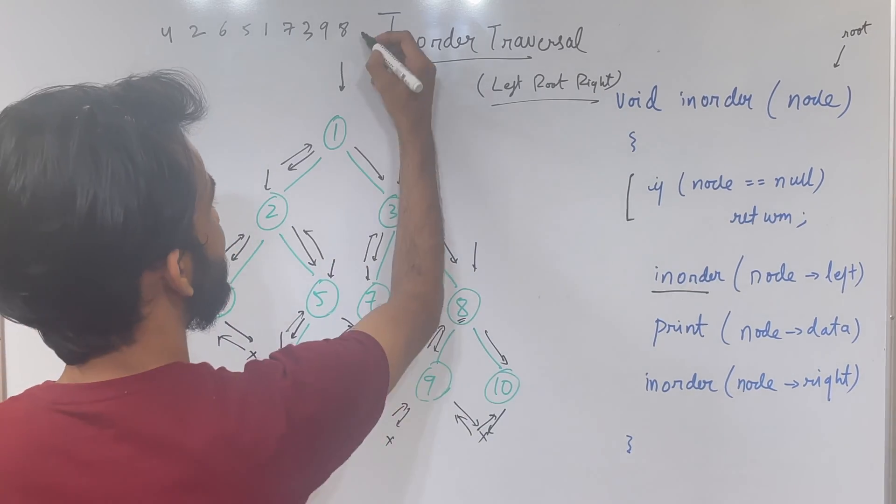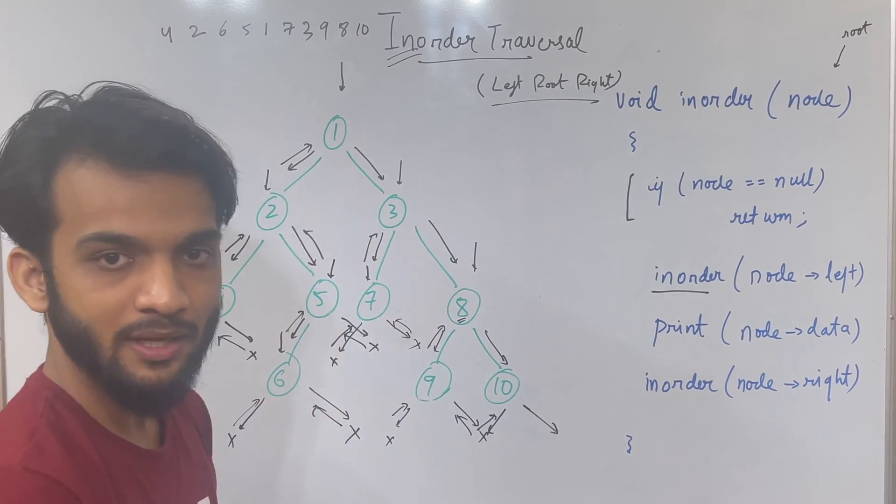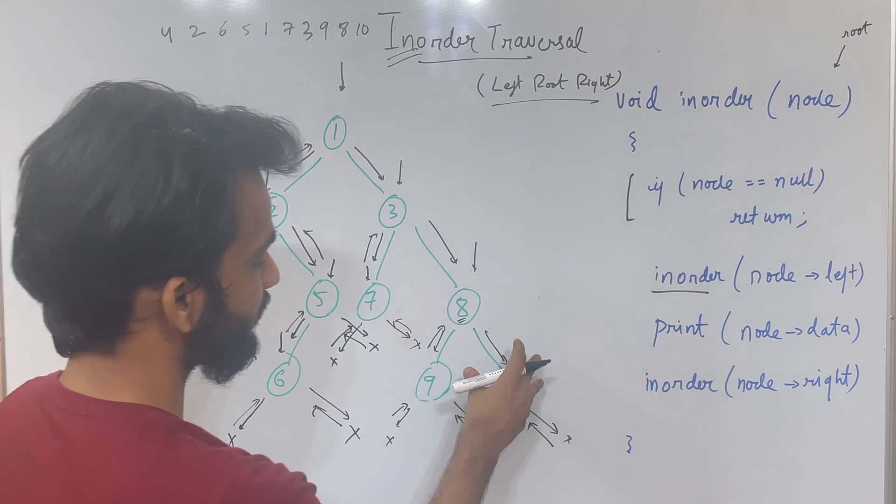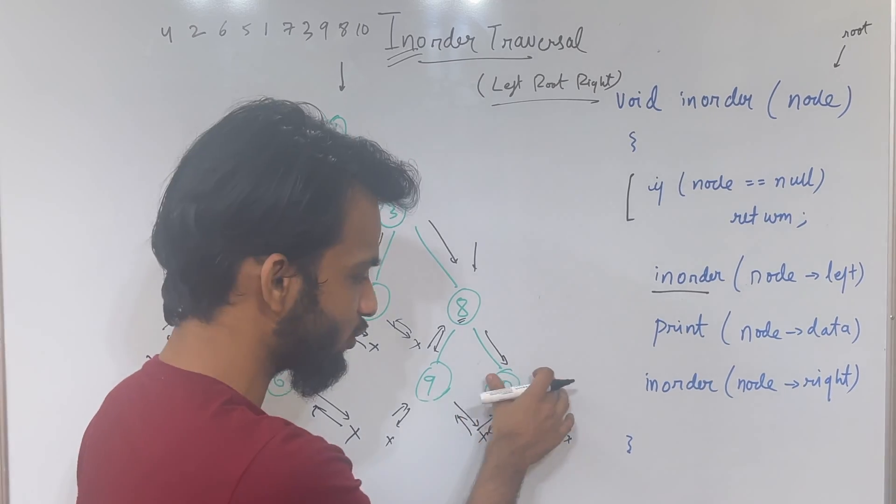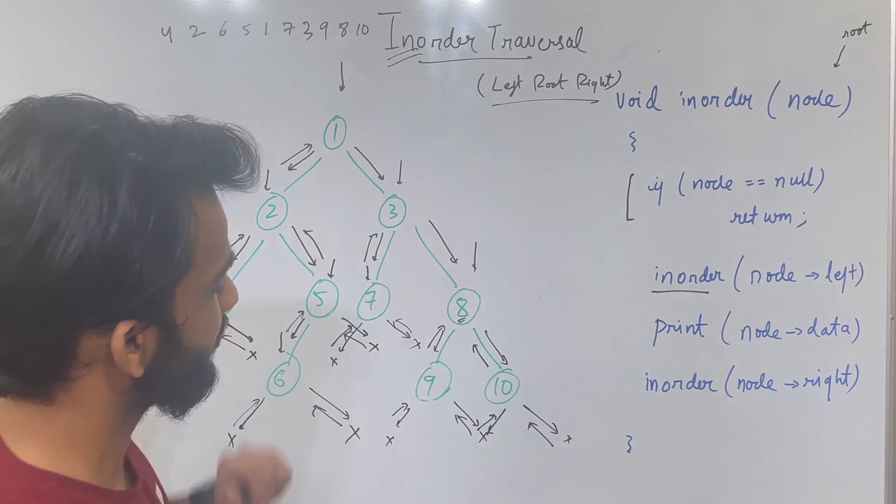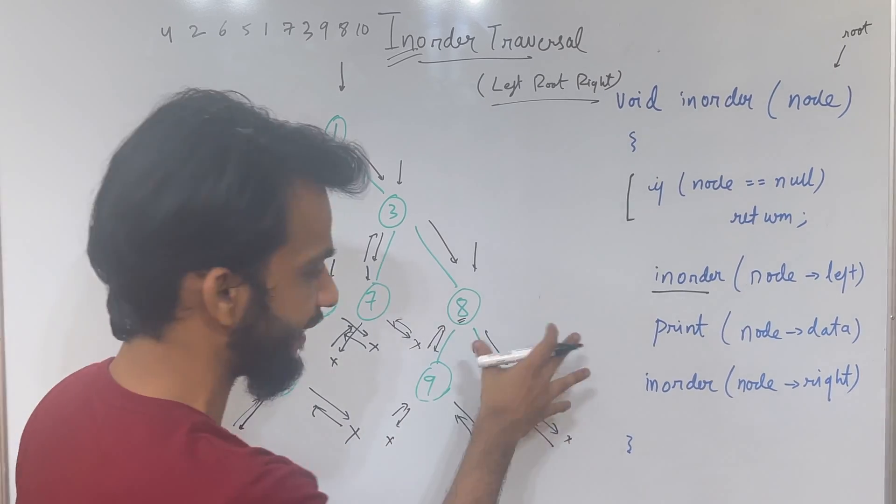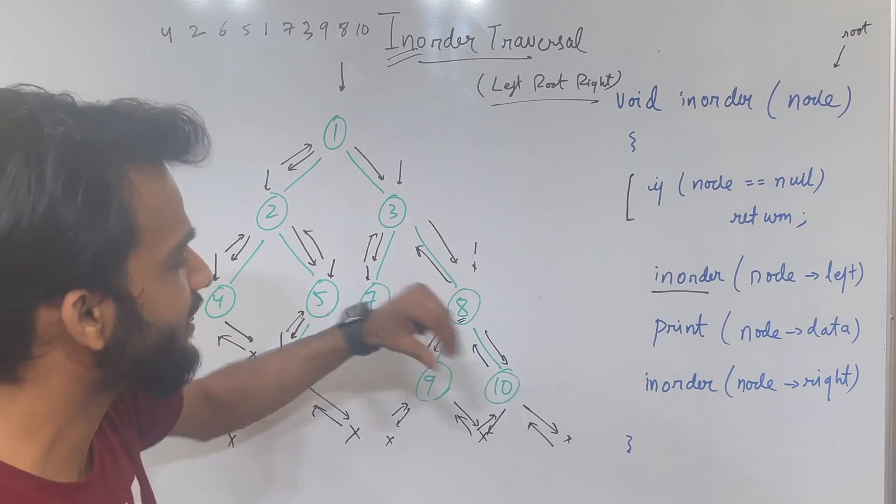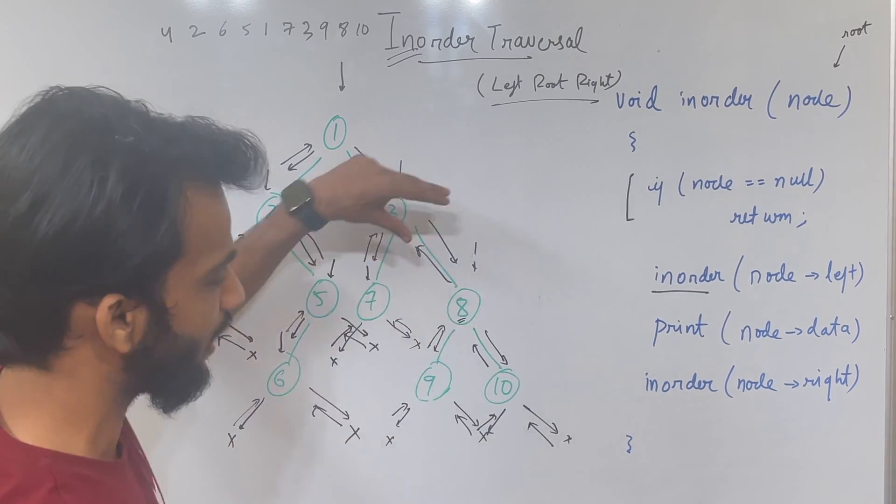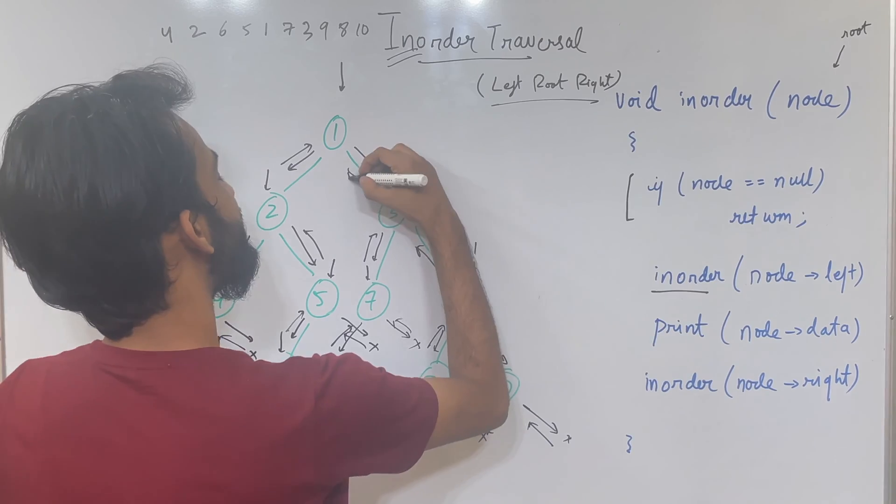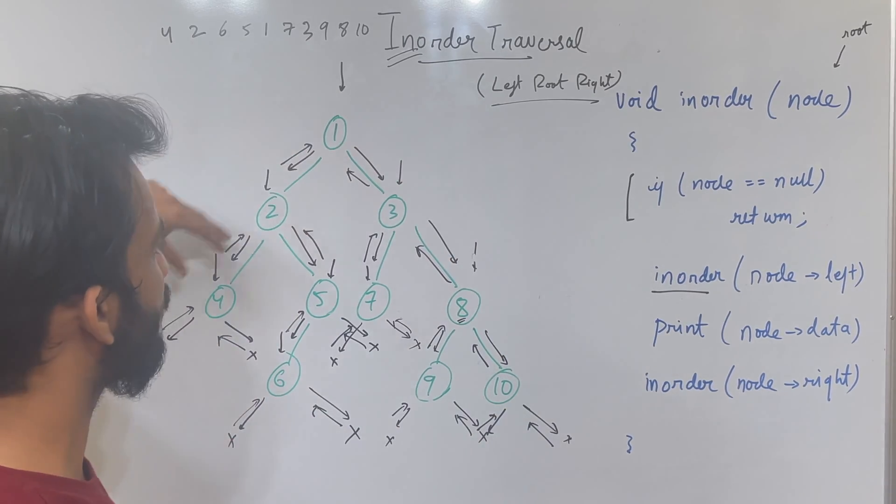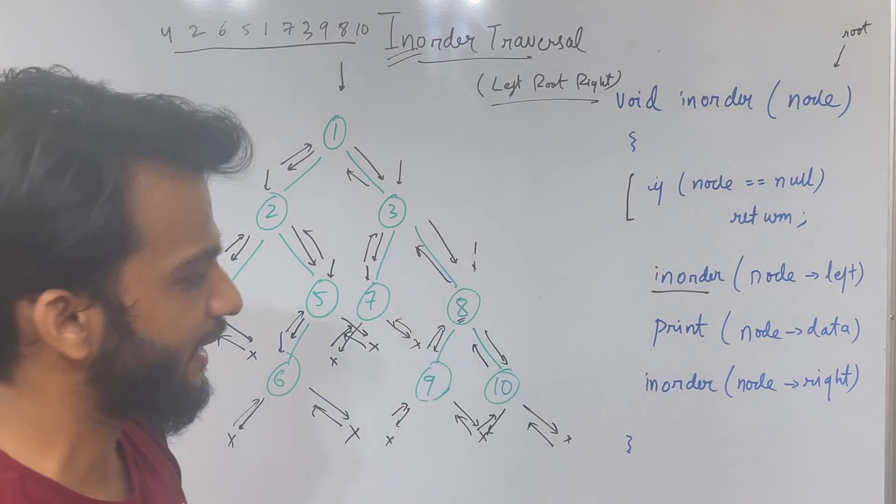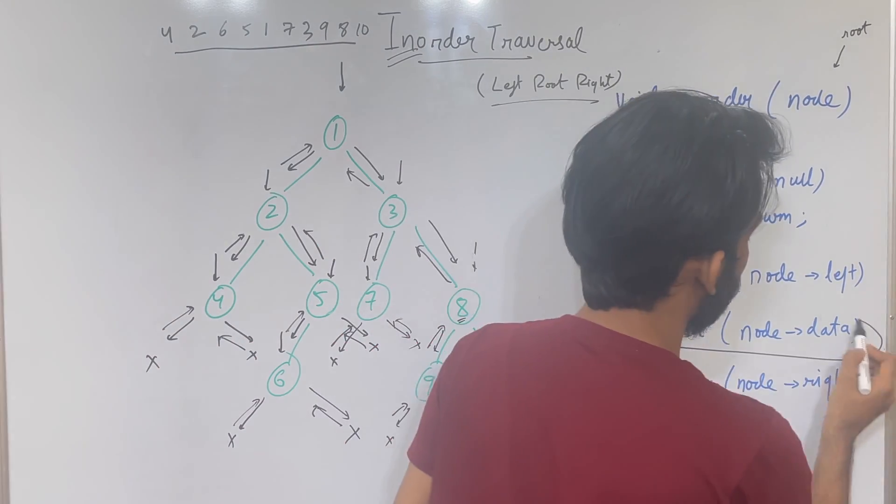Then it will go right. Again it will find null. So it will go back. Now for 10, left is over, printing is over, right is over. Goes back. For 8, left is over, printing is over, right is over. Goes back. For 3, left is over. For 3, left is over, printing is over, right is over. Goes back. For 1, left is over, printing is over, right is over. So ultimately, this is your in-order traversal that you did do by printing.